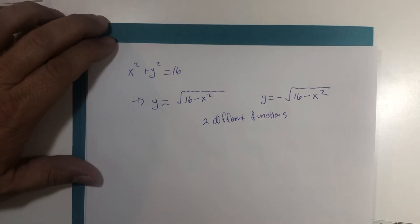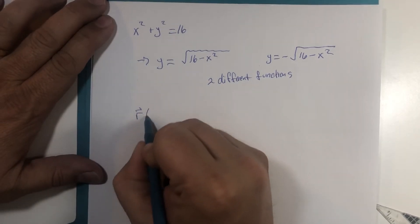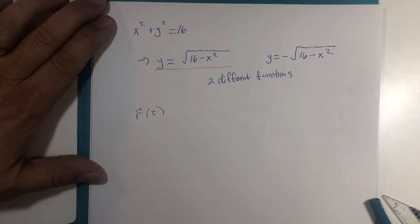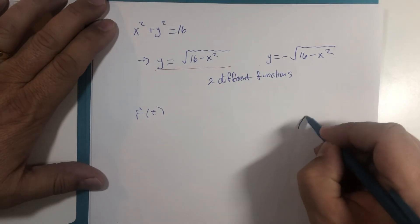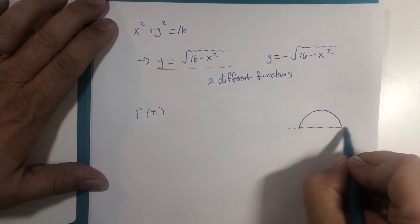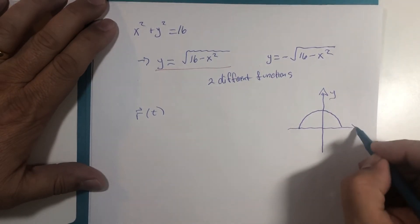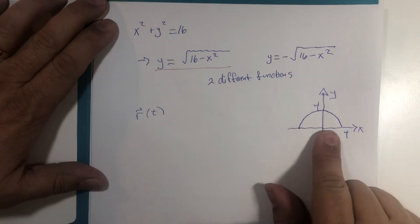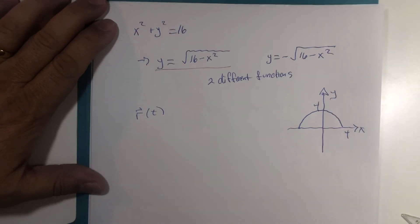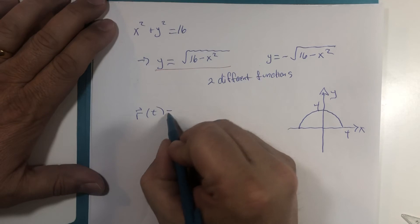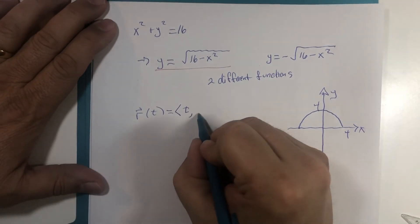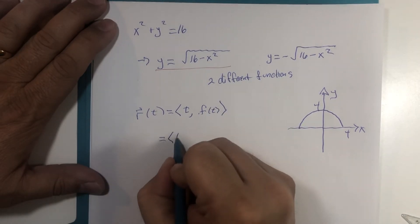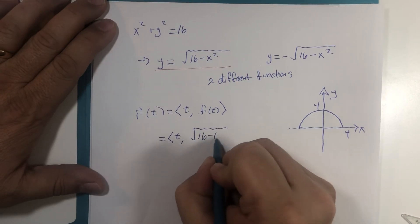So if I were to attempt to write my R of T using this version right here, I would only be looking at the upper portion of the circle. Y axis, x axis, four and four. I would only be looking at this part of the circle, but I can use that function notation concept. If you let x become t, then y would become the function of t. And in this case, t square root 16 minus t squared.